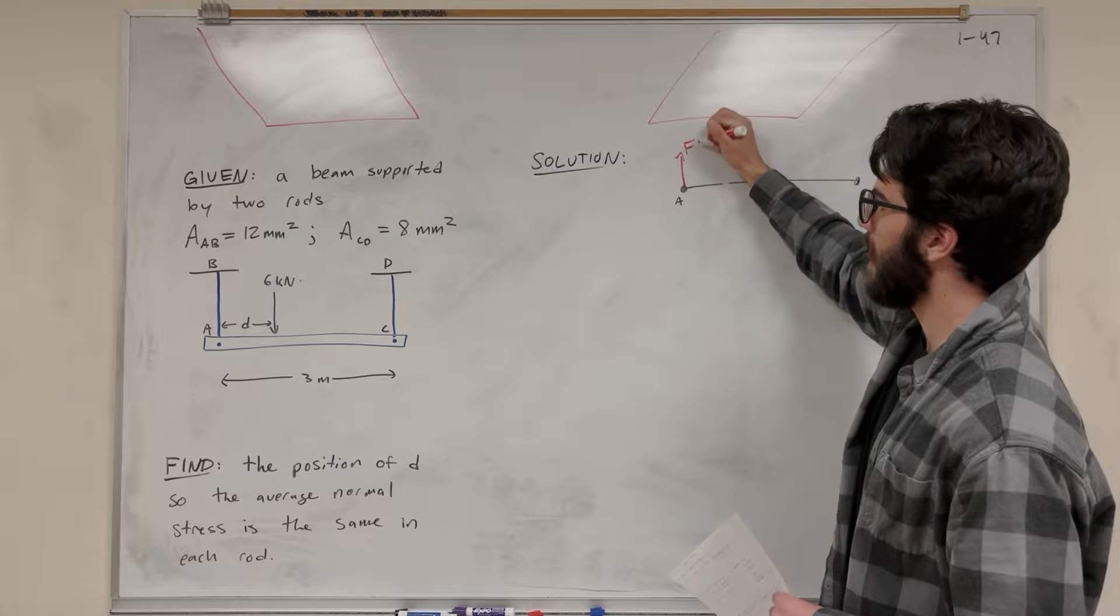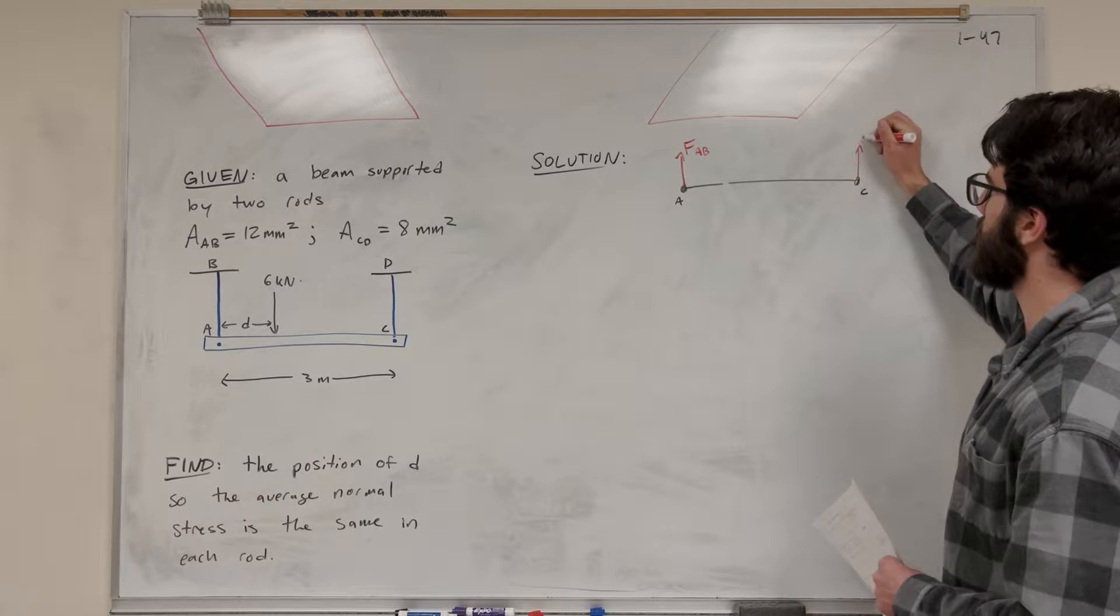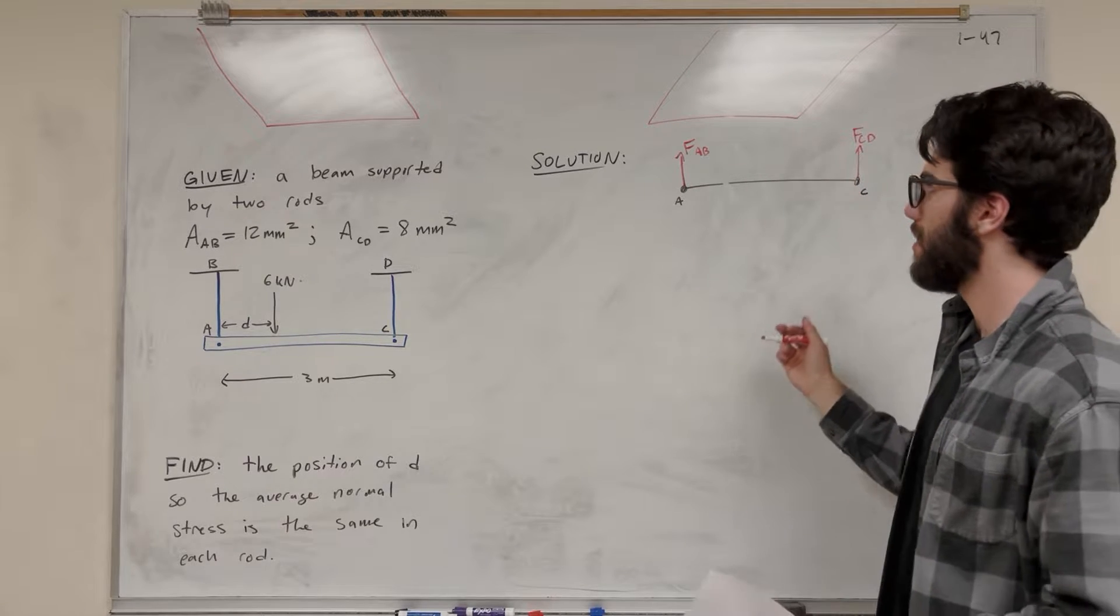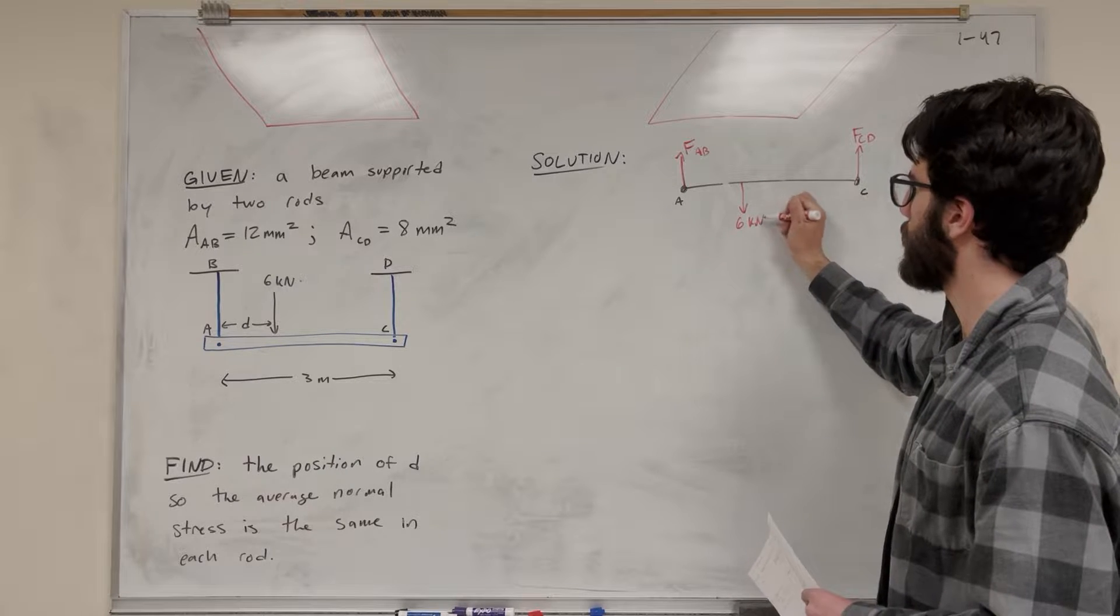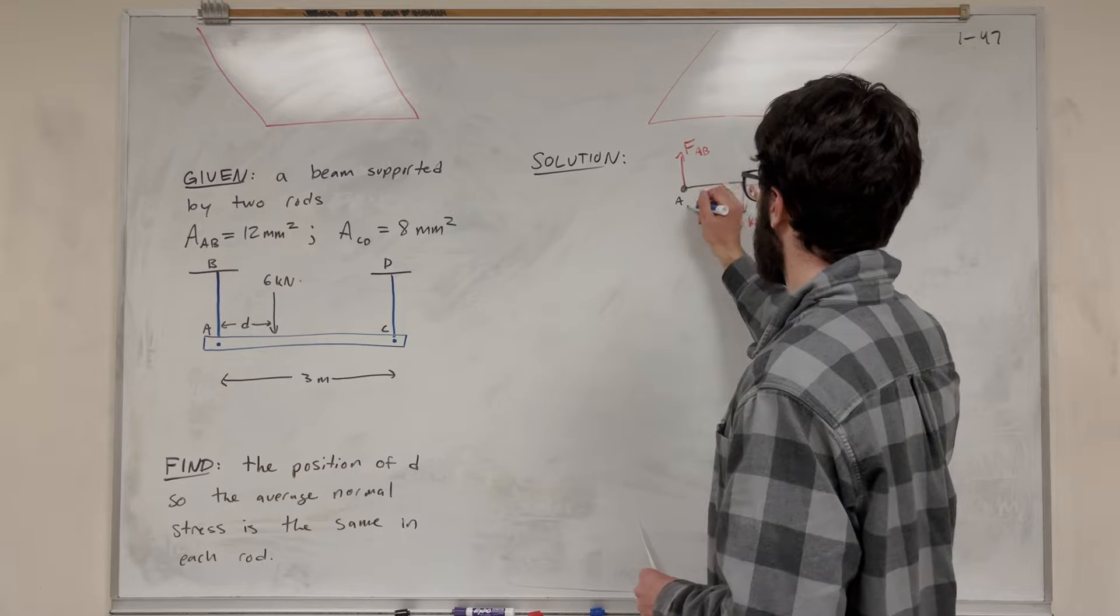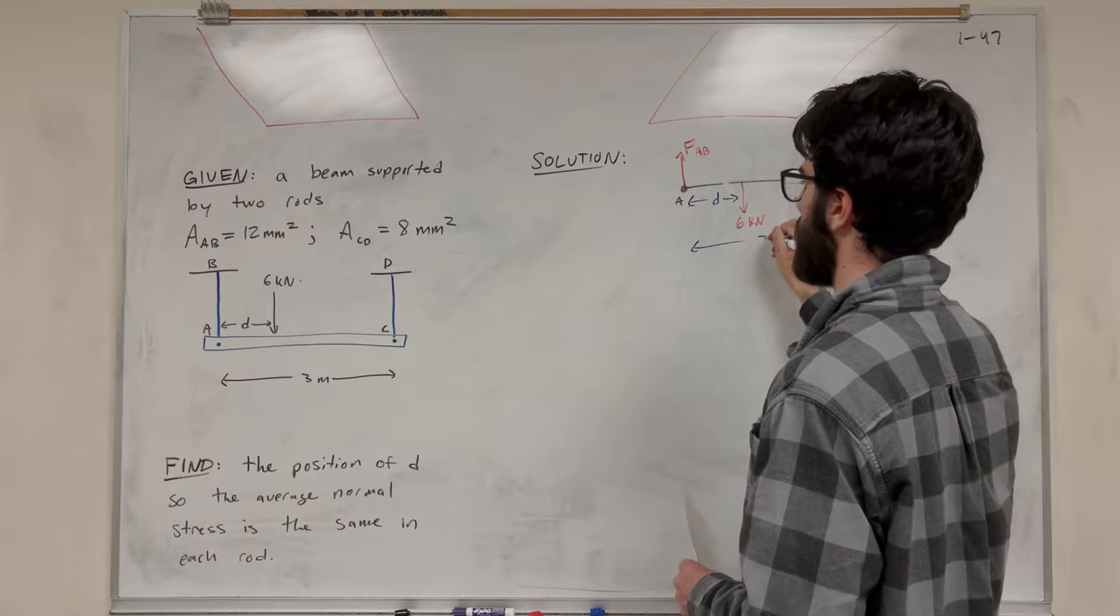So this is going to be force AB. And this is going to be force CD. It pushes up, the tension holding up. And then we're going to have that negative six kilonewton load pushing down. And its distance is D away. So this is D. And we know that this whole thing is three meters.